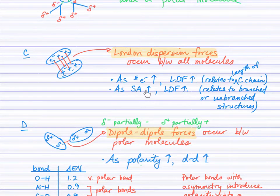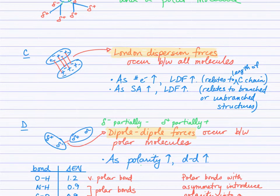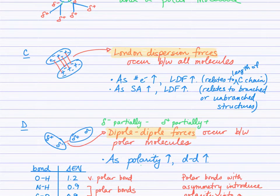What increases the strength of a London dispersion force? If there are more electrons in a molecule, the attractions between neighboring molecules will be stronger. London forces increase as the length of the carbon chain increases, and also as surface area increases. This will relate to comparing boiling points of isomers of alkanes — the more stretched out a molecule is, as opposed to branched or compact, the greater the surface area and the stronger the London dispersion forces.